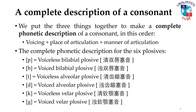We know that their manner of articulation is the same because they are all plosives. However, we can still put them into different groups either based on voicing or on their place of articulation. In terms of voicing, P, T, K are all voiceless, whereas B, D, G are all voiced. In terms of place of articulation, P and B are both bilabial, T and D are both alveolar, and K and G are both velar.